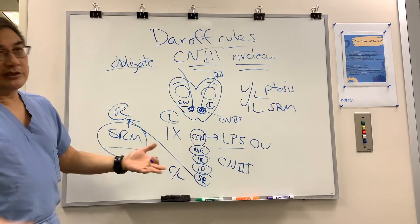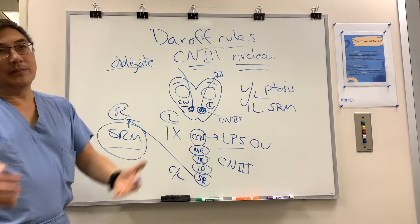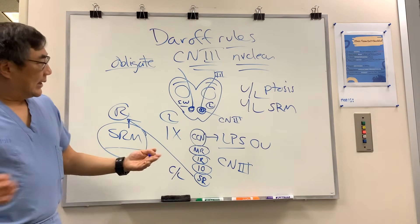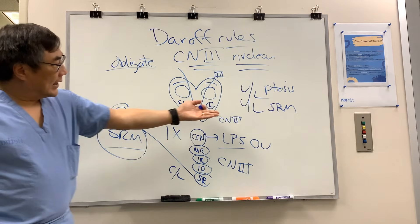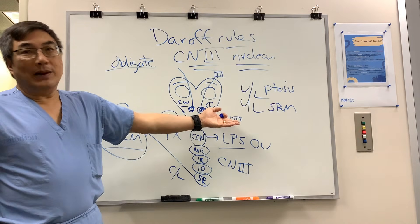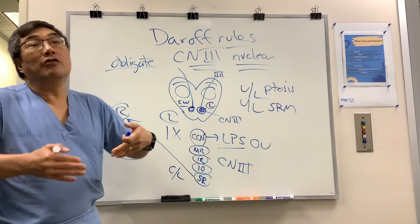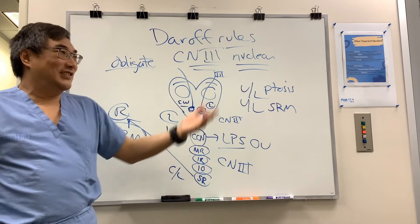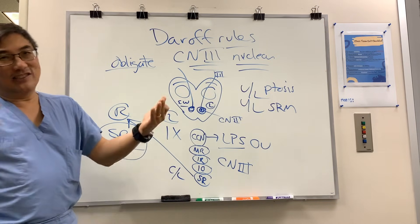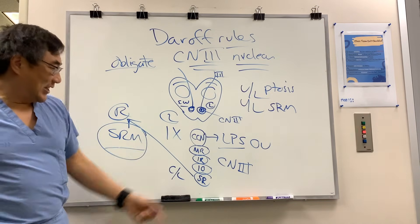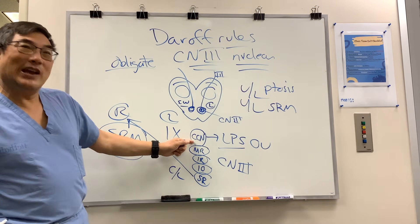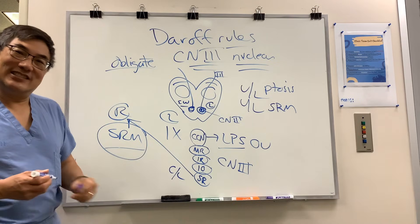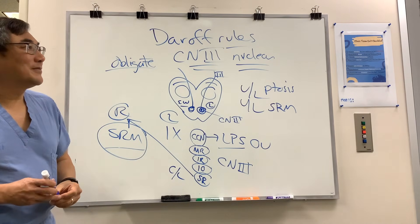Then there are the in-between ones — a bilateral pupil finding could be either nuclear or not nuclear. And the last rule: bilateral no ptosis. A third nerve palsy with no ptosis is also obligate nuclear, because you've spared the single central caudal nucleus. These are the Daroff rules.